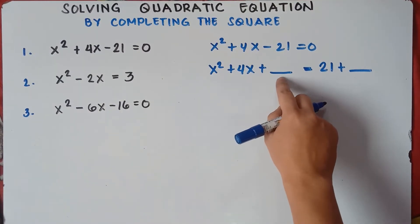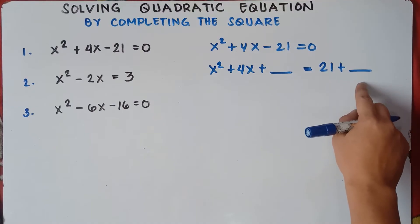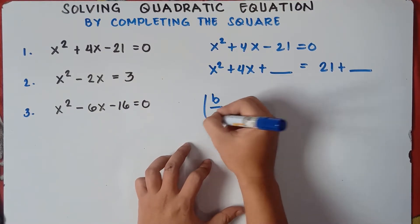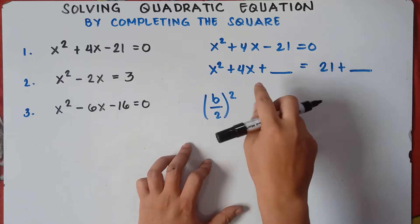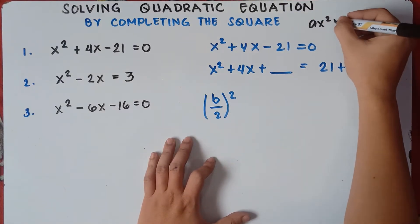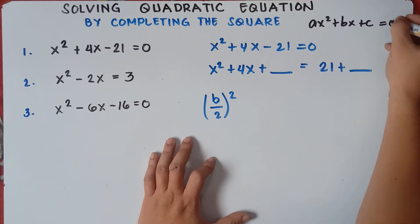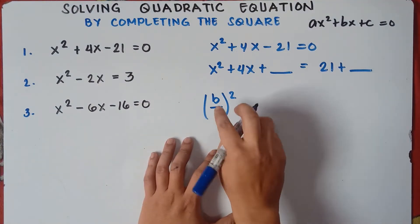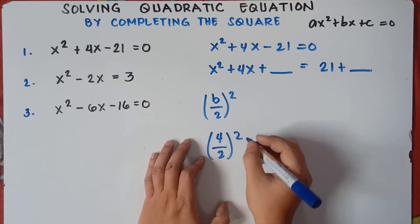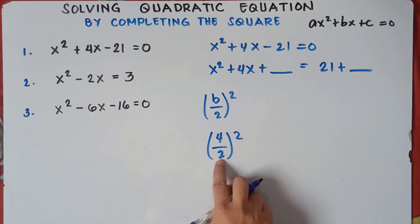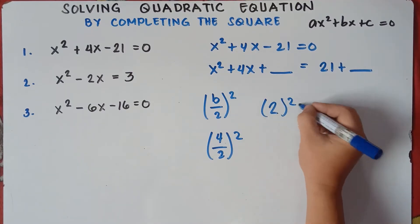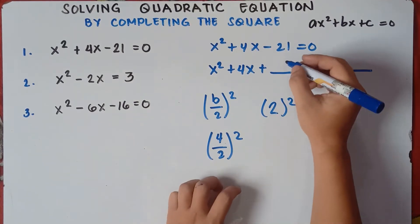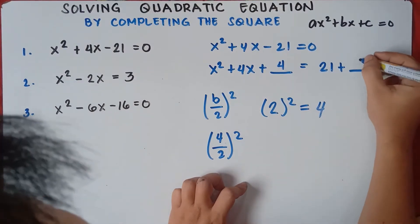The number that we will add on this equation is the same number that we will add on the right side. We have the formula: b over 2, quantity squared. Our b is 4, from the standard form ax squared plus bx plus c equals 0, where b is the coefficient beside x. So substitute: 4 divided by 2 is 2, then squared — 2 times 2 is 4. Therefore, we will add 4 on the left side and also add 4 on the right side.